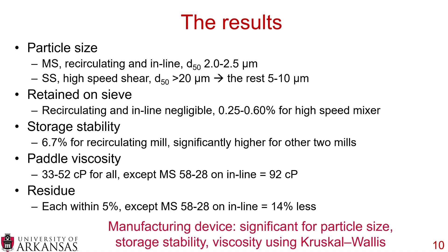We ran a Kruskal-Wallis statistical analysis and found significant effects of manufacturing device for particle size, storage stability, and viscosity. So yes, the high-speed shear mixer, the recirculating mill, and the inline mill do produce statistically different numbers for particle size, storage stability, and viscosity. More research is needed, but this is a very nice study that looked at three different manufacturing devices with three operator groups and five tests across three types of emulsions.